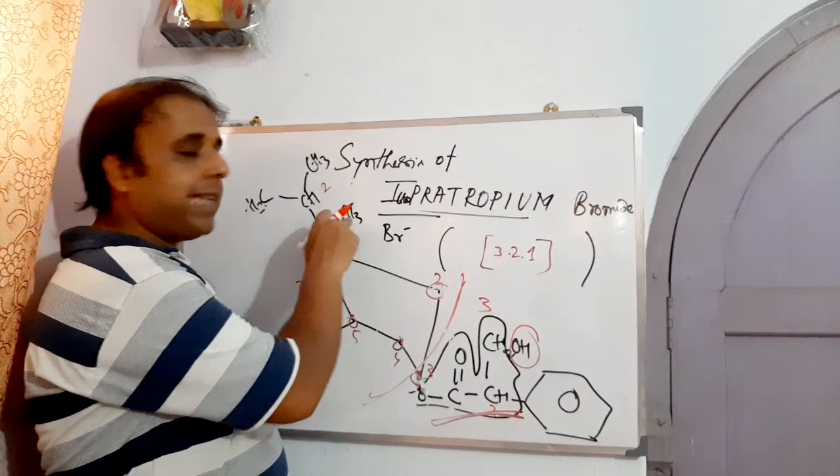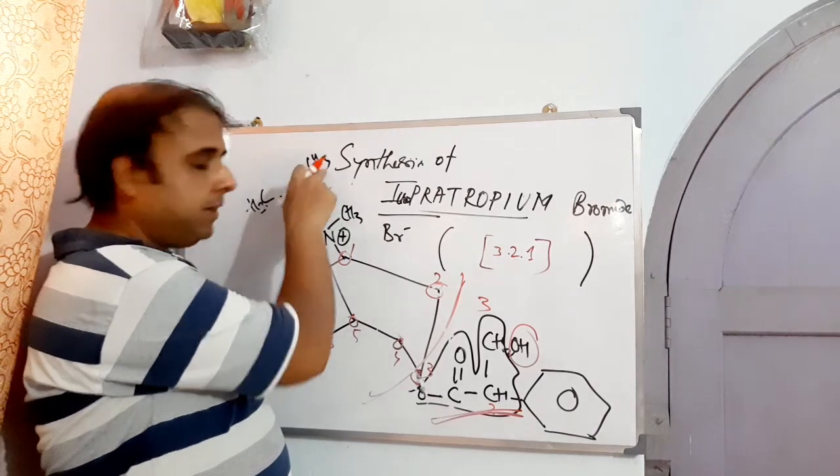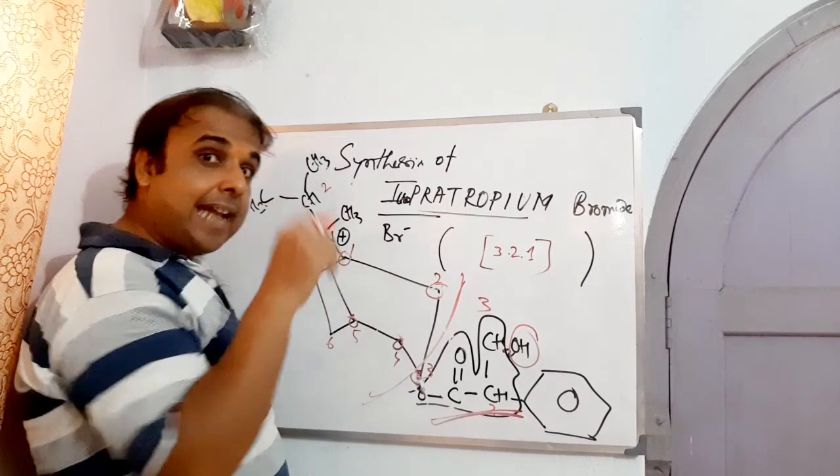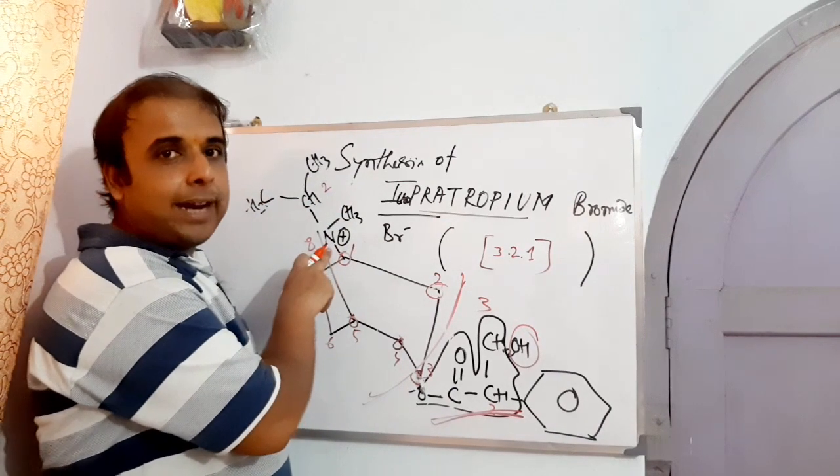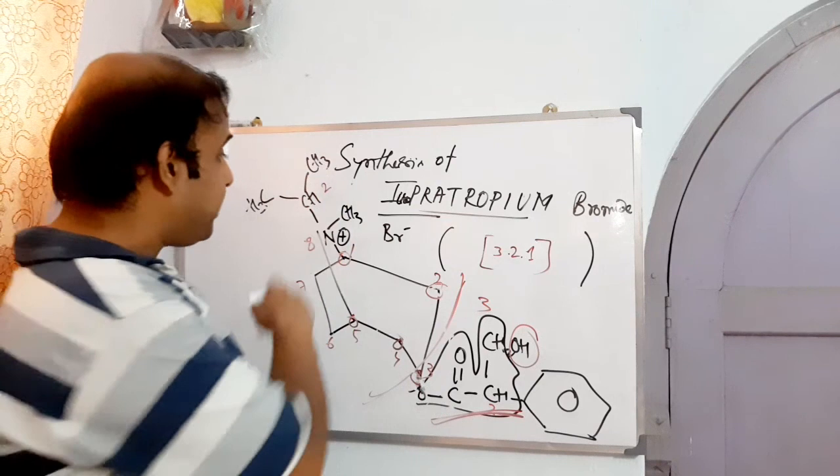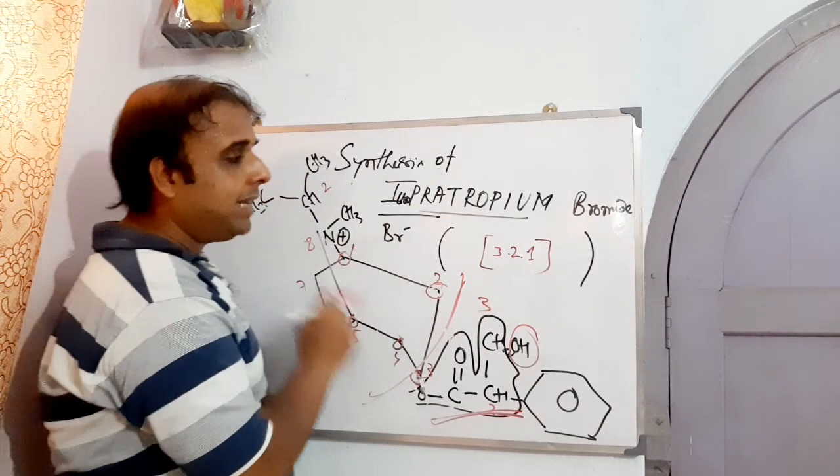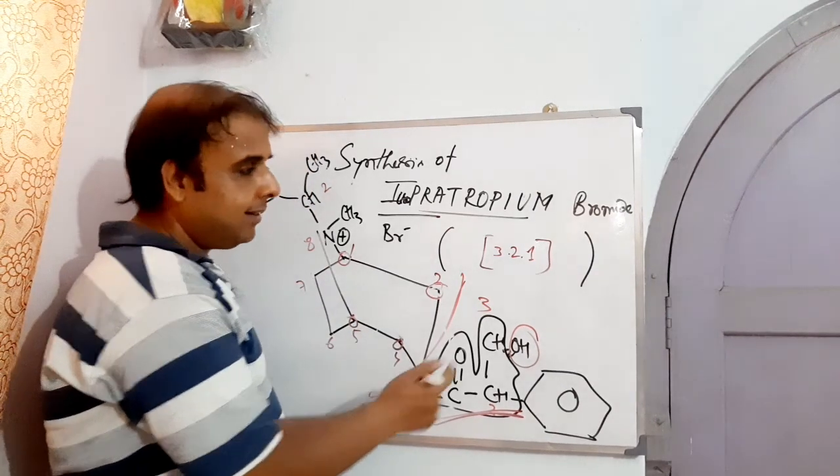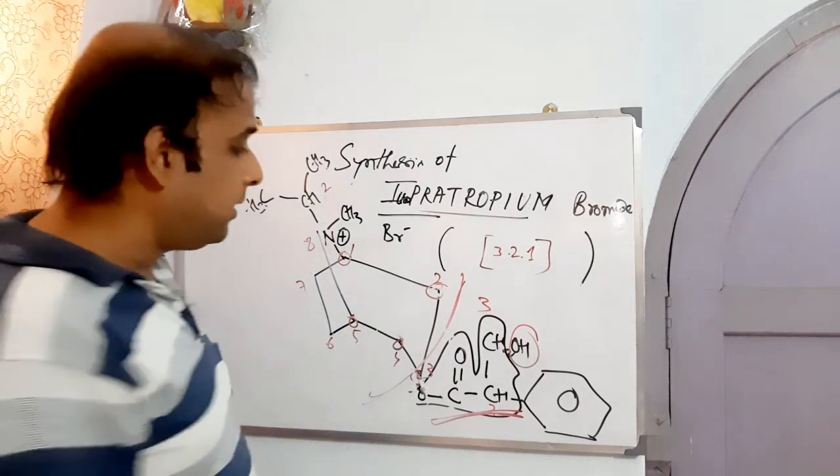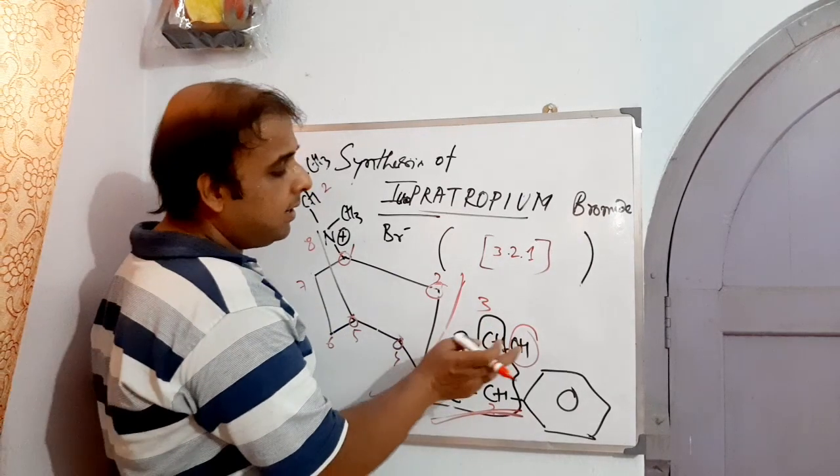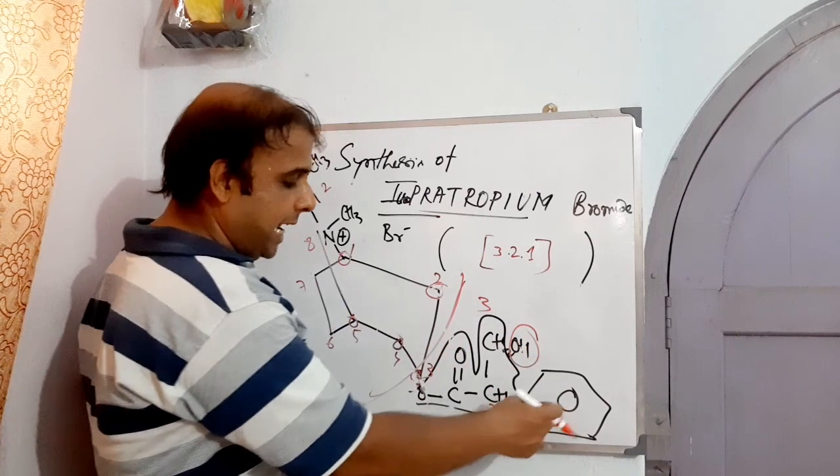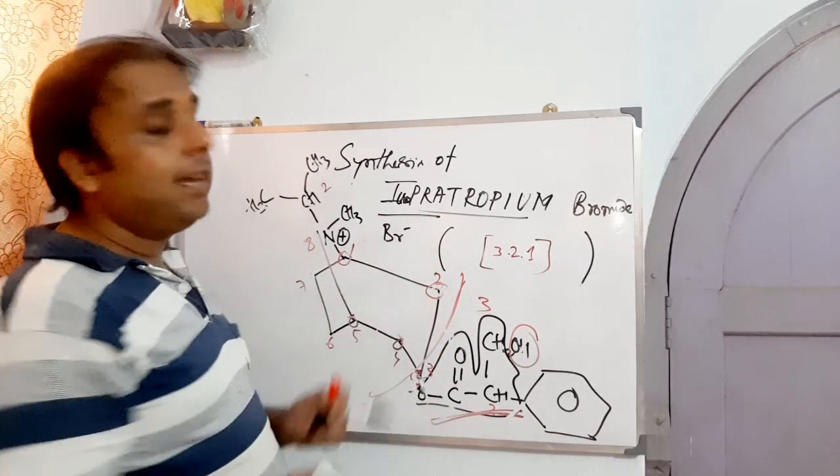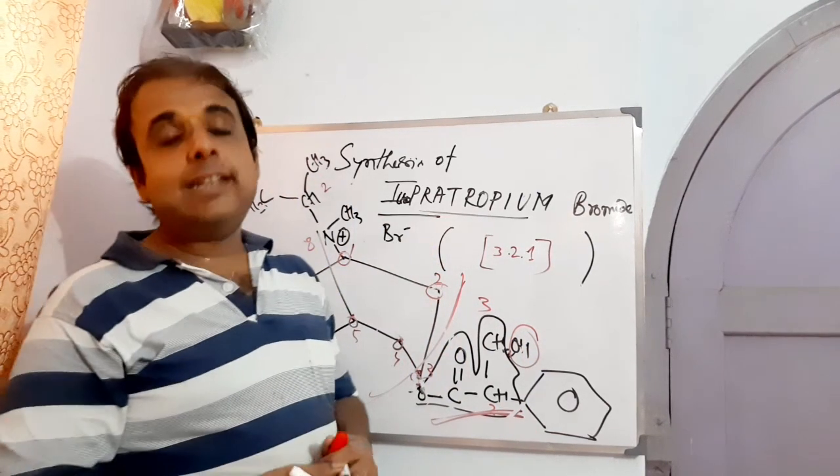So what I told initially: eight methyl, eight propan-two-yl, then bicyclo, or eight azania. We have to mention the heteroatom present in the bicyclic system: eight azania, then bicyclo, then three, two, one, then octan, then three yl. Close the bracket. And after that, we are left with the propanoate basically. So it is three hydroxy, two phenyl, propanoate bromide. That's all. So this is the way Ipratropium bromide can be named.